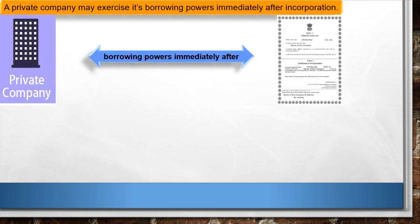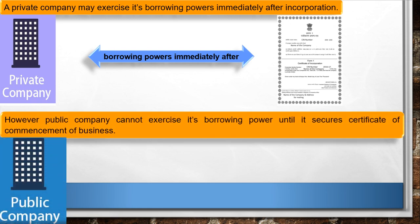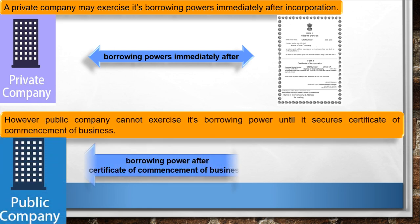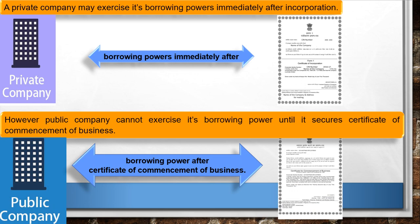A private company can exercise its borrowing powers immediately after incorporation. However, a public company cannot exercise its borrowing powers until it secures a certificate of commencement of business. Public company को certificate of commencement of business मिलने के बाद ही borrowing power मिलते हैं.